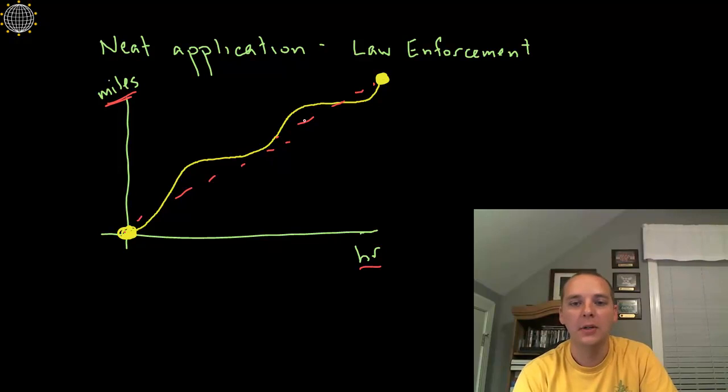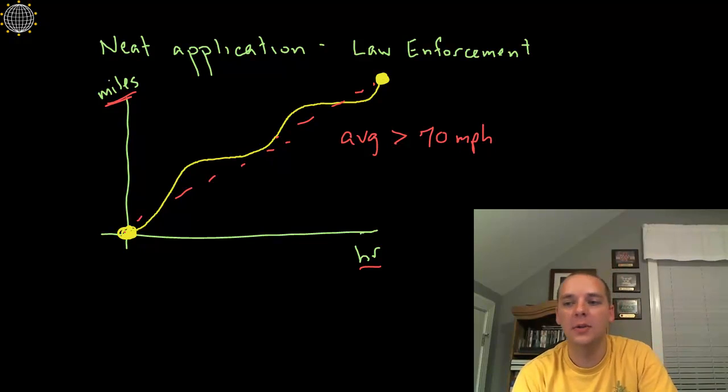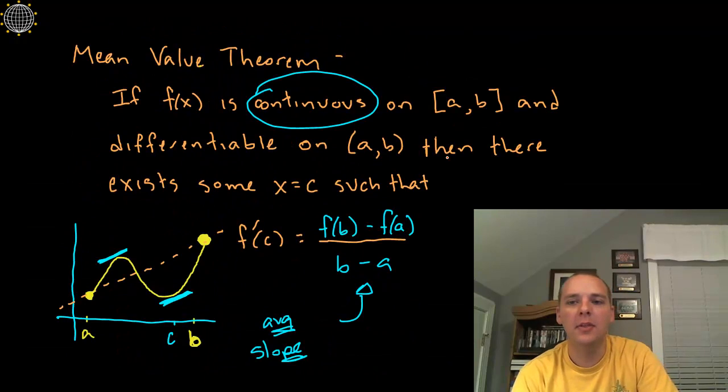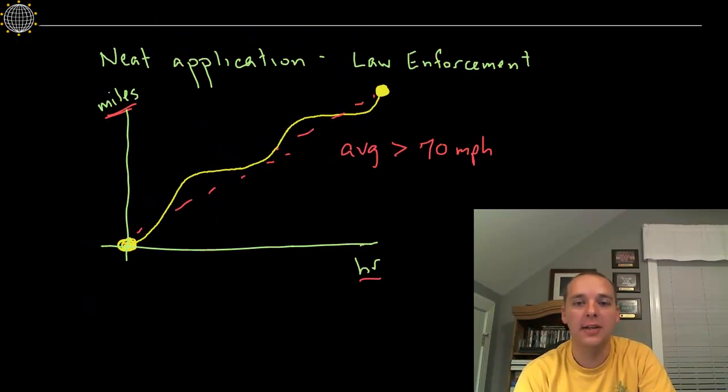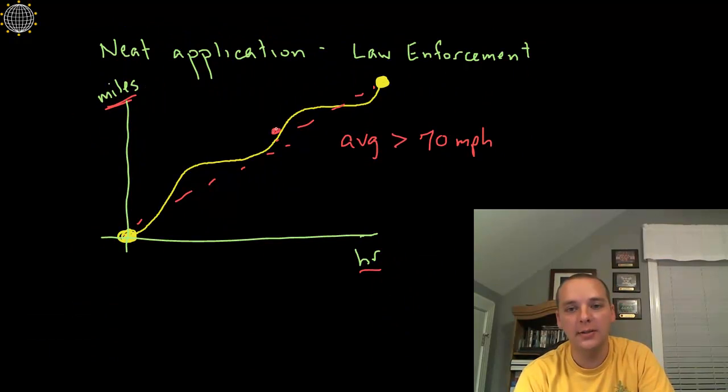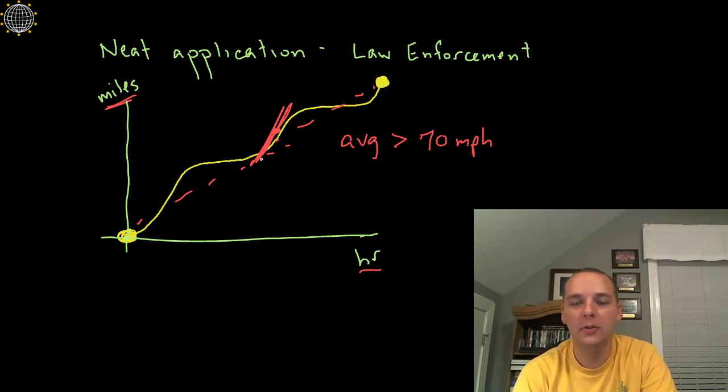And if that average is greater than whatever the speed limit is, let's say seventy miles per hour, then what would the mean value theorem say? Well, let's read it again. It says that then there exists at least one moment in time where the slope, or your miles per hour at that moment in time, match the average slope. Meaning if your average rate of change is eighty miles an hour, then there has to be at least one point here, let's say like right here, whose slope is eighty miles an hour, which would be speeding. So it's kind of just a neat little side application there of where you might see something like this in real life.